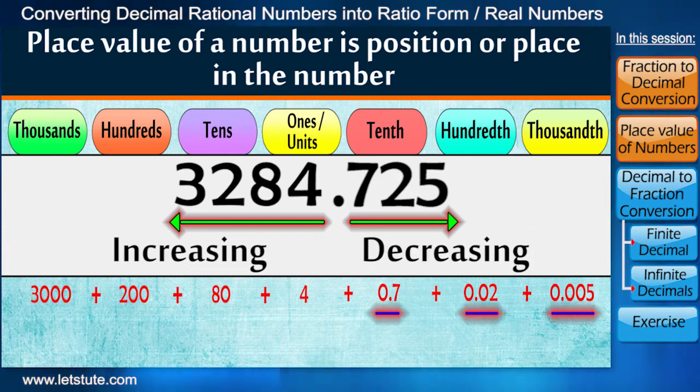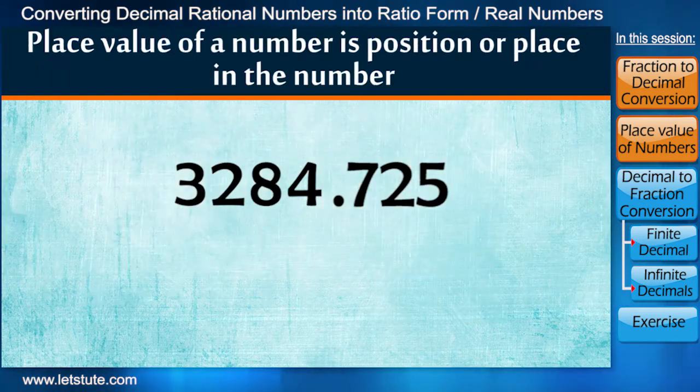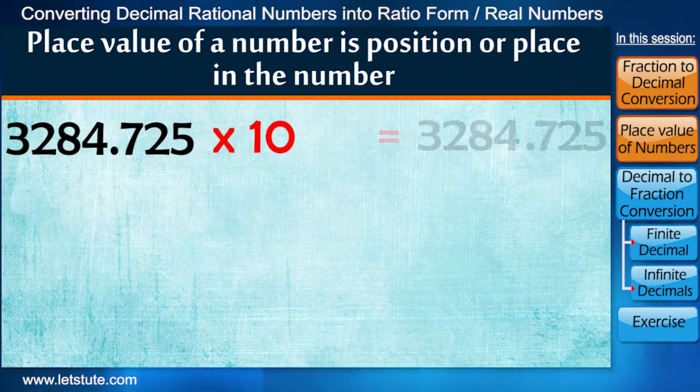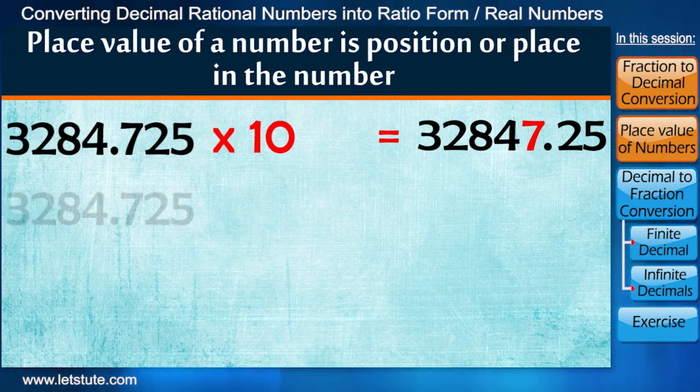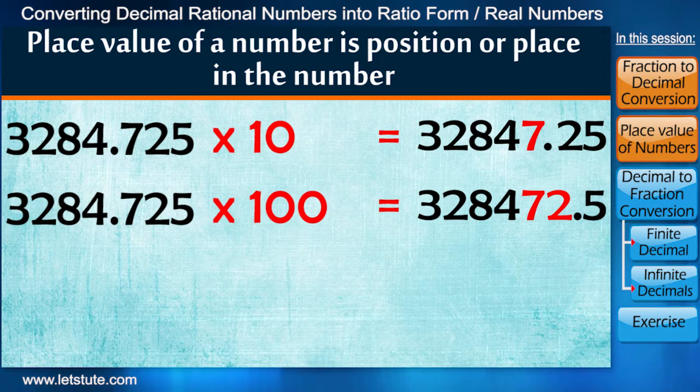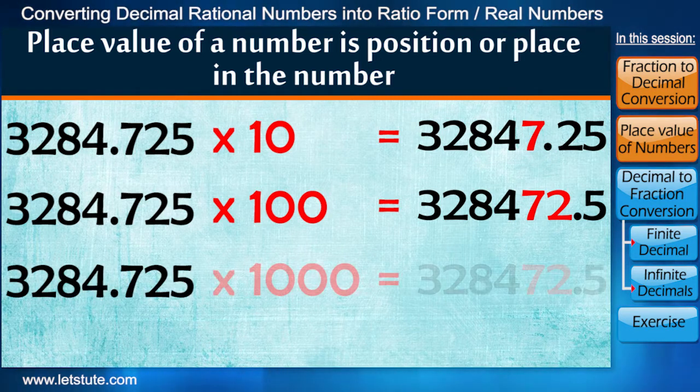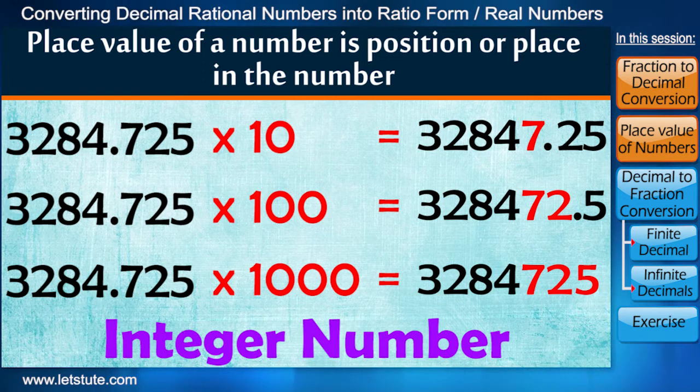Now if we multiply by 10, then one digit will shift to the left of decimal. If we multiply by 100, then two digits will shift to the left. And when we multiply by 1000, then all three digits will shift to the left and we will get an integer number.